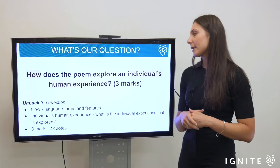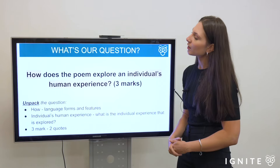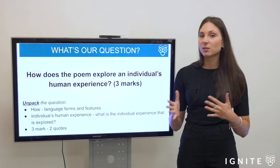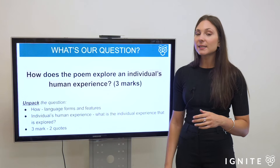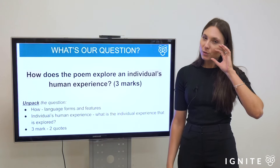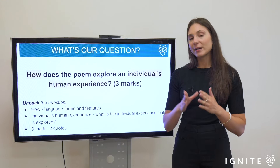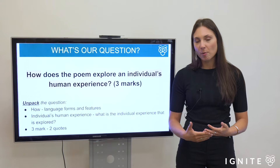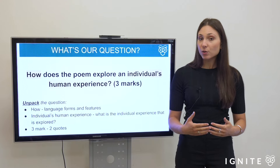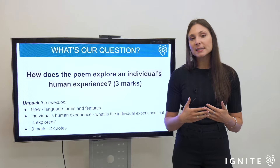The question is: 'How does the poem explore an individual's human experience?' In the exam you must identify the key terms directing what you need to take away from the text. Here we've got the key term 'how' — whenever we see 'how' we know we need to discuss language forms and features. But our super key term, the one main focus, is 'individual's human experience.' You don't want to just restate the key term in your topic sentence; you want to offer something to it.